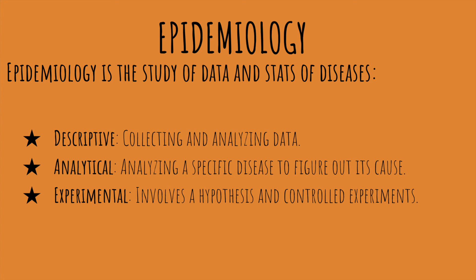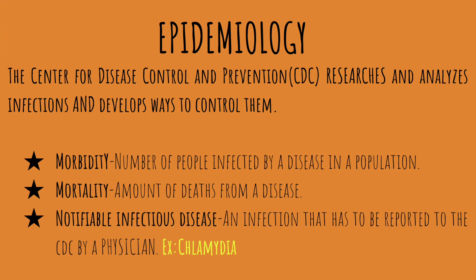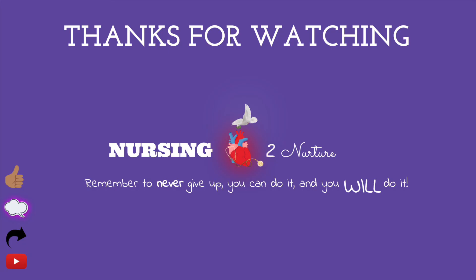Epidemiology studies the statistics and data of diseases. There are three types of epidemiological investigations: descriptive epidemiology, which collects and analyzes data; analytical epidemiology, which analyzes a specific disease to find its cause; and experimental epidemiology, which involves hypotheses and controlled experiments. The CDC researches and analyzes infections and develops ways to control them. The Morbidity and Mortality Weekly Report (MMWR), published by the CDC, shows how many people have been infected by a disease (morbidity) and deaths caused by a disease (mortality). A notifiable infectious disease must be reported to the CDC by a physician.